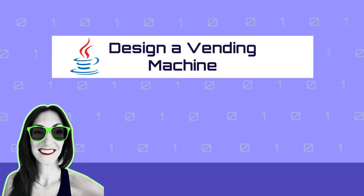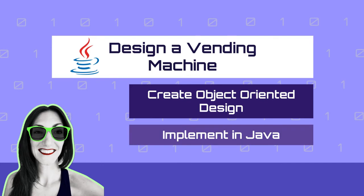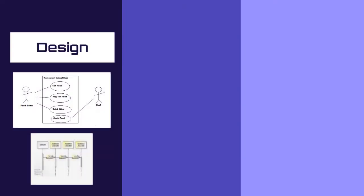I will go straight to the point and show you the process to define how your vending machine should work. I will help you to create an object-oriented design for your vending machine and we will see how to implement it in Java. Our vending machine will be text-based, meaning we will interact with it through the console. In the first part of this tutorial, we will define how our vending machine works. We will create use cases and UML diagrams to define and clarify these requirements.